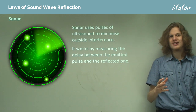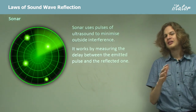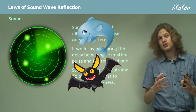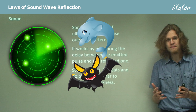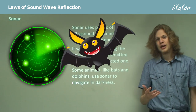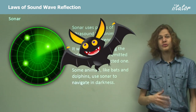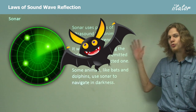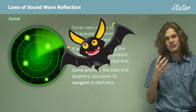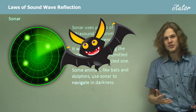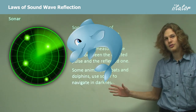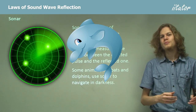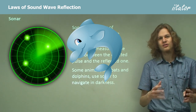Some animals, like dolphins or bats, use sonar — or echolocation — as a means of perceiving their environment. Bats spend most of their waking hours in the dark, so they can't rely on their eyes; instead, they send out ultrasound pulses and listen to the reflections to find their way, even in total darkness. Dolphins do a similar thing underwater, where very little light reaches great depths.